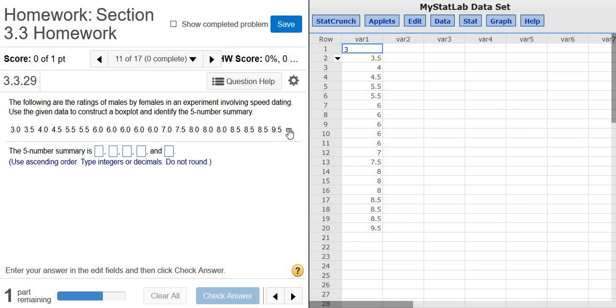So you want to start by left-clicking this little box here, and then clicking Open in StatCrunch. When you do that, it'll actually put all of the data into StatCrunch for you.